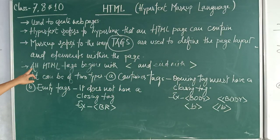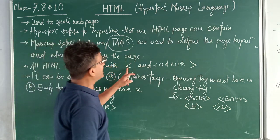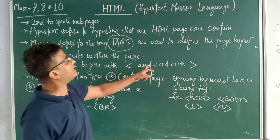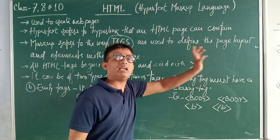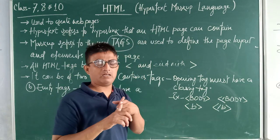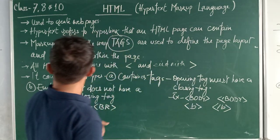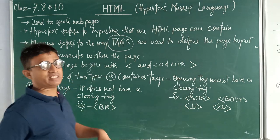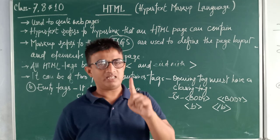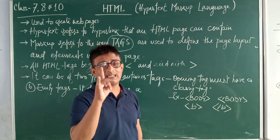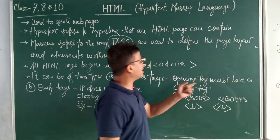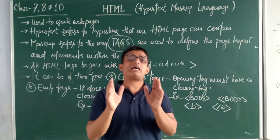Now, all HTML tags begin with an angular bracket, right angular bracket, and end with left angular bracket. It can be two types of tags. Number one, container tags.